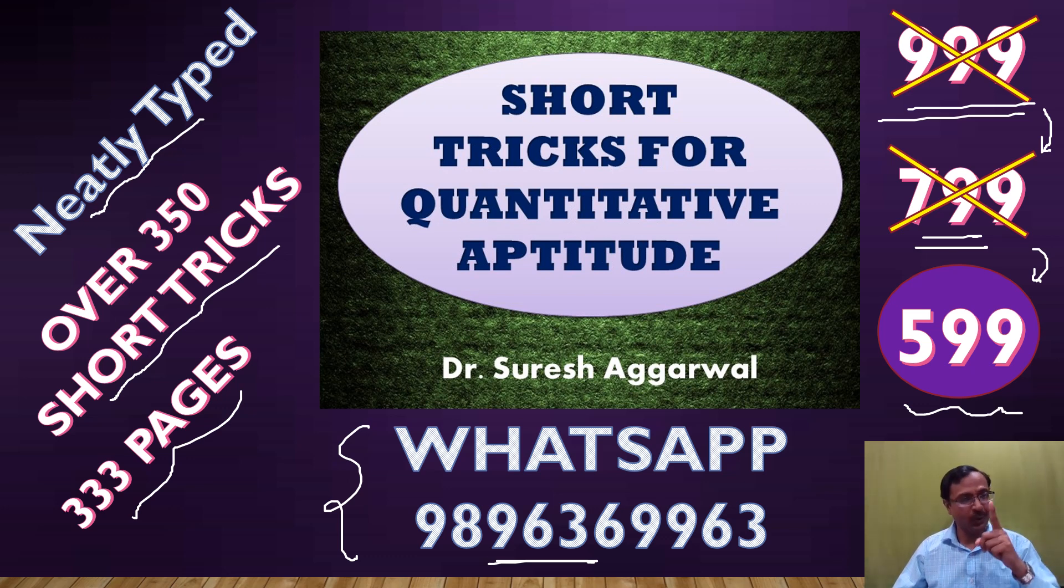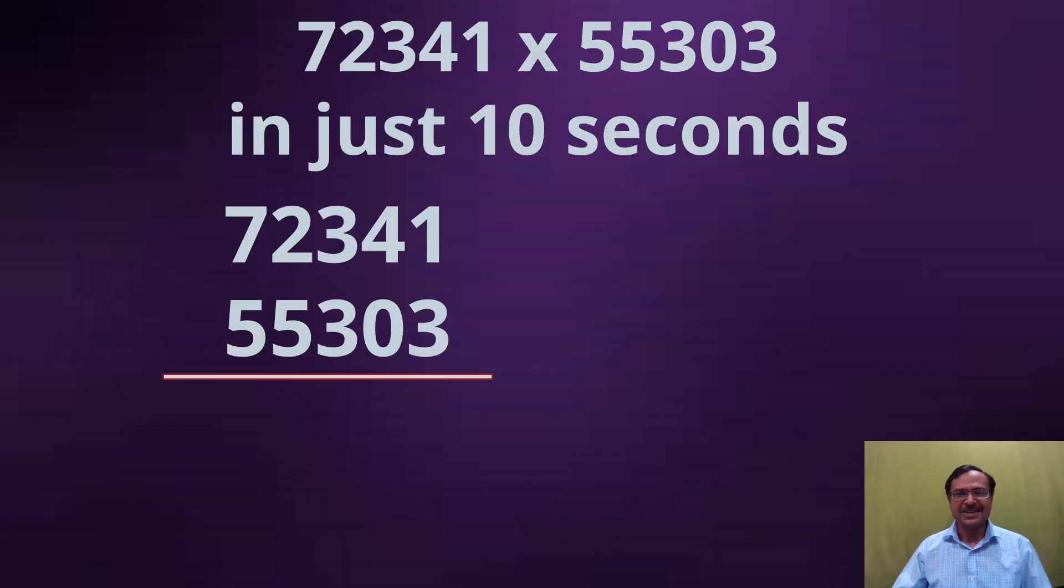Let's see the trick. You all know the Vedic trick of vertical and crosswise, or the crisscross method. I am going to demonstrate that to you in cracking this question of multiplication: 72341 multiplied by 55303. That's an amazing, difficult multiplication.